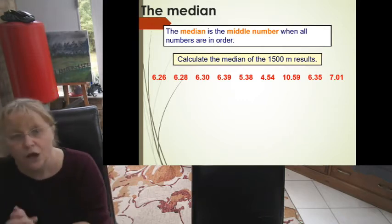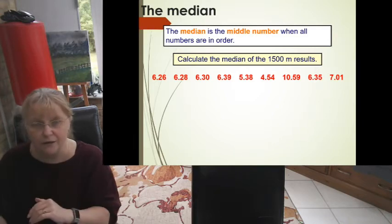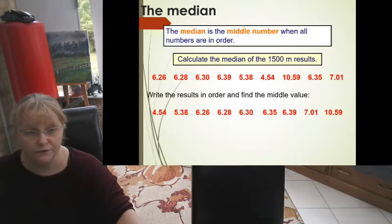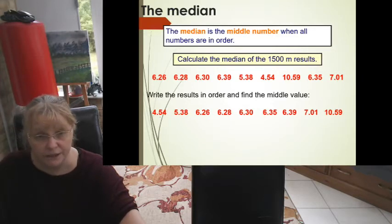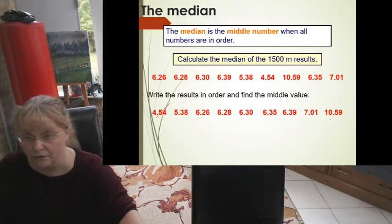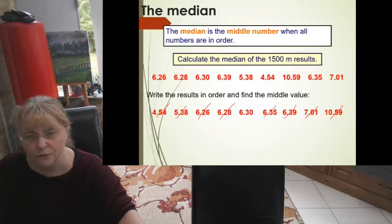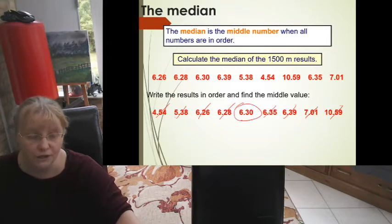It's easily done. What we normally do is put it in order and just count in and find the middle number. For this one, it's quite straightforward because we just cross off there, cross off there. It's a slow process, but it works out really nice. And look, that's the middle number, quite straightforward.